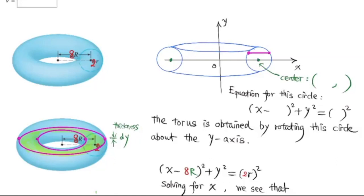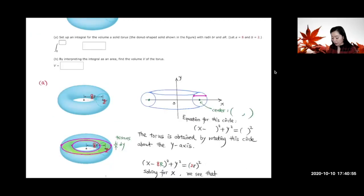This torus is obtained by rotating this circle above this y-axis. So first, let's look at this core section, it's a circle.